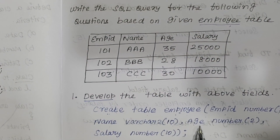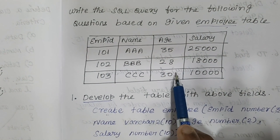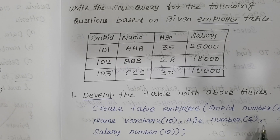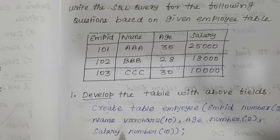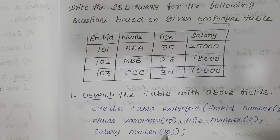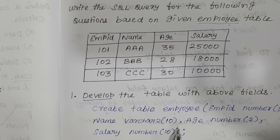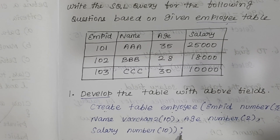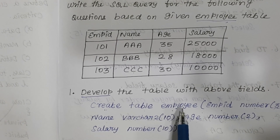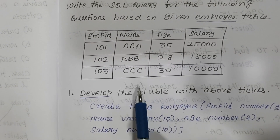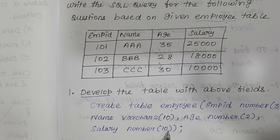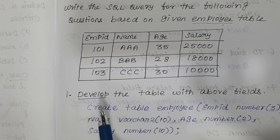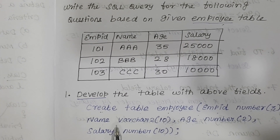For 'age', mention NUMBER(2). Then comma, then 'salary' as NUMBER(10). Finally, close with the bracket and put a semicolon. This is the query for creating a table. Remember: 'develop' means you have to write both CREATE as well as INSERT.